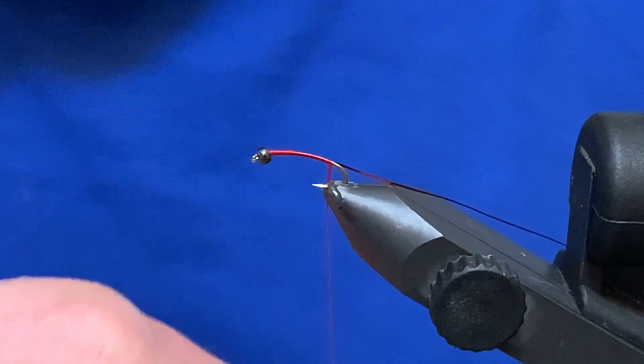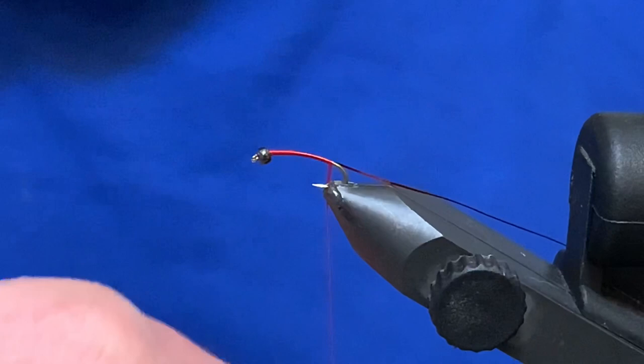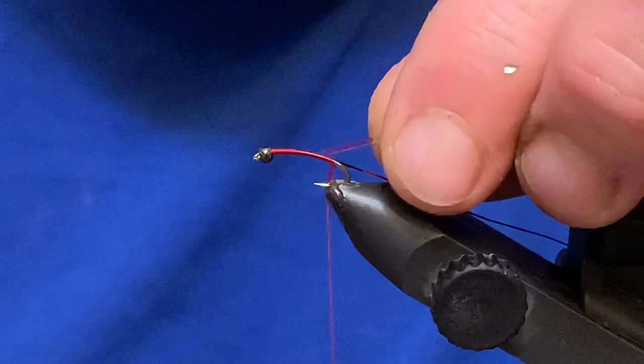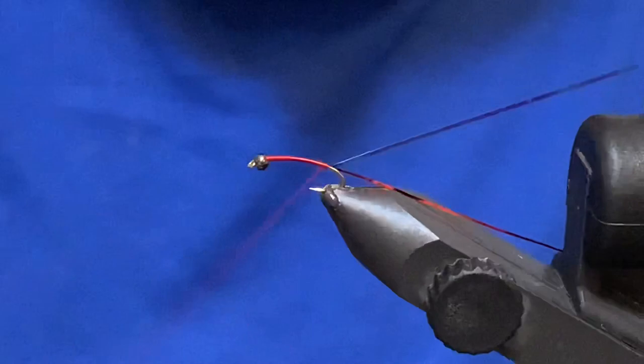So the reason for the red thread... all I did there was cut that to a little point, and then I just capture it right at the very back with some nice tight wraps. It squishes down. It's a super thin material, so it's really easy to work with.